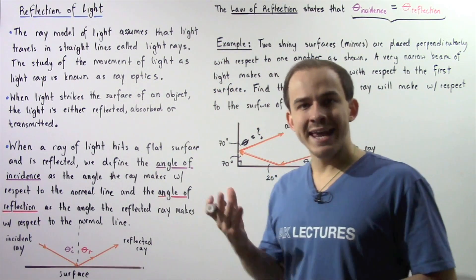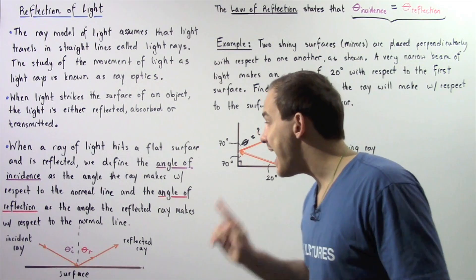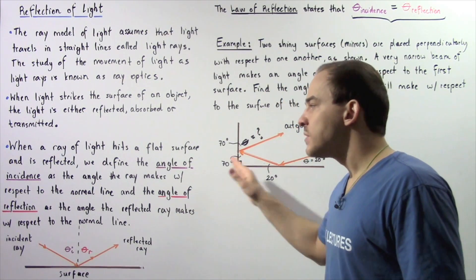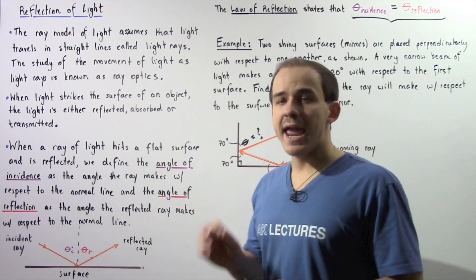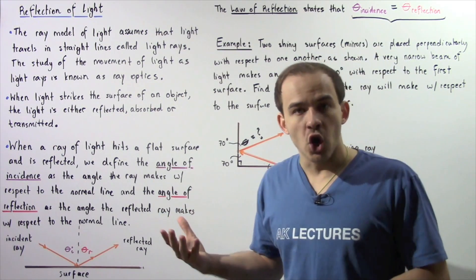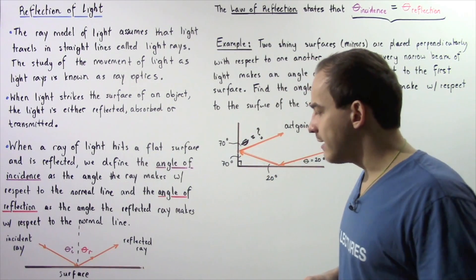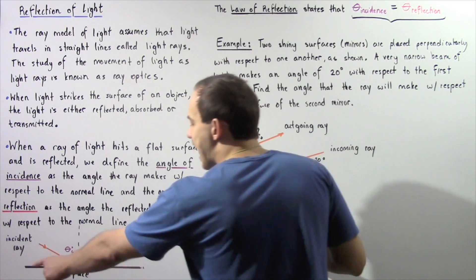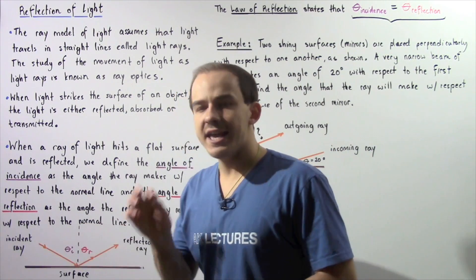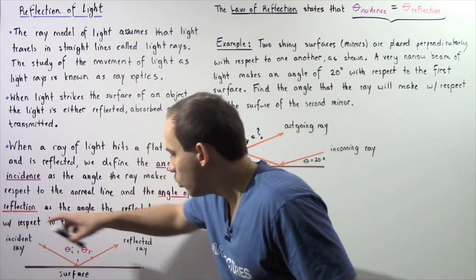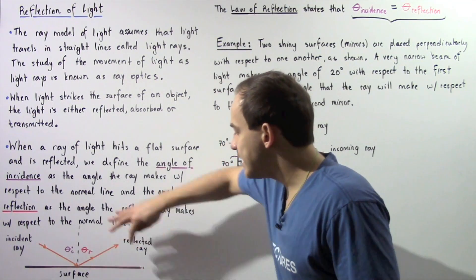When a ray of visible light hits a flat, shiny surface and is reflected, we define the angle of incidence as the angle that the incoming or incident ray makes with respect to the normal line that is perpendicular to the surface. We define the angle of reflection as the angle that the outgoing or reflected ray makes with respect to the normal line. Let's examine the following diagram.